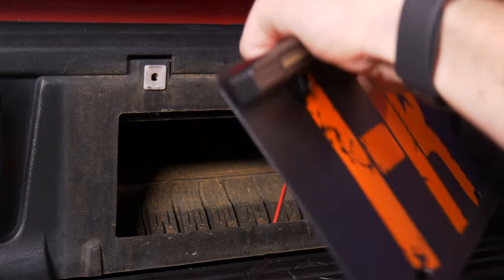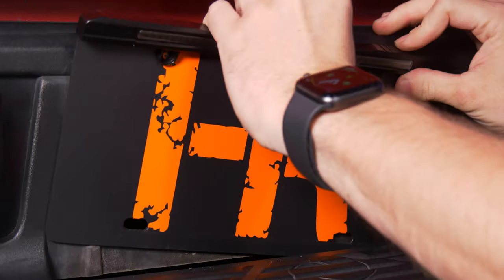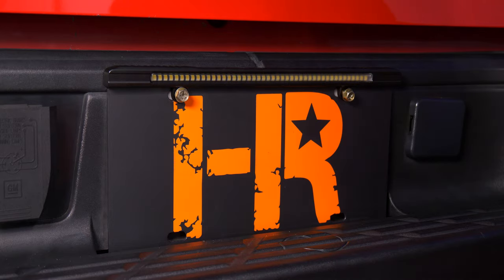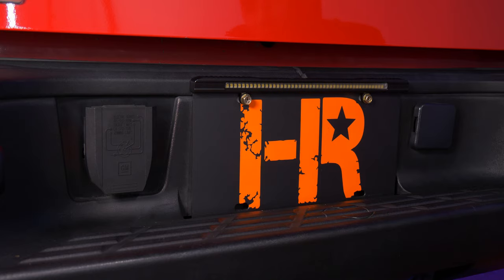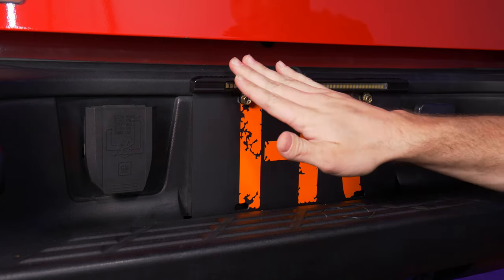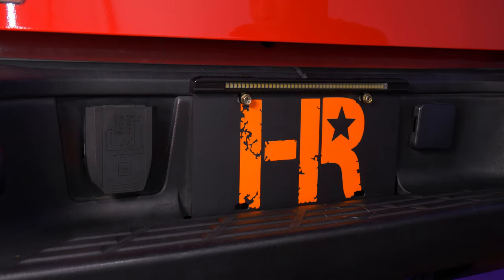Set the plate bracket over your factory license plate and reinstall your mounting screws. Go ahead and snug the screws up at this time. Now at this point, what we need to do is run our wiring for the plate bracket itself up to the taillight to connect to the reverse light circuit.